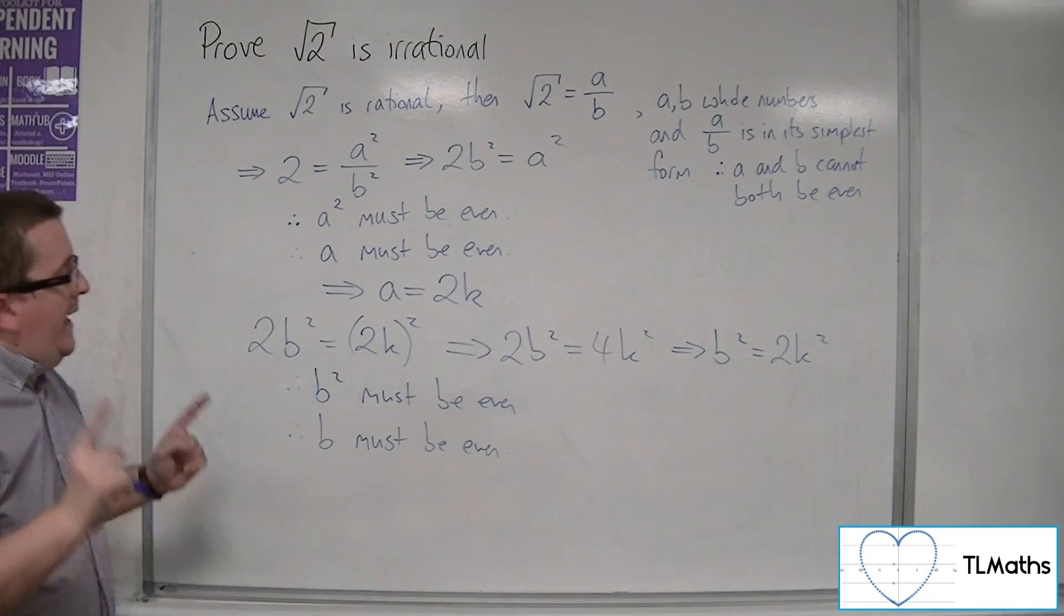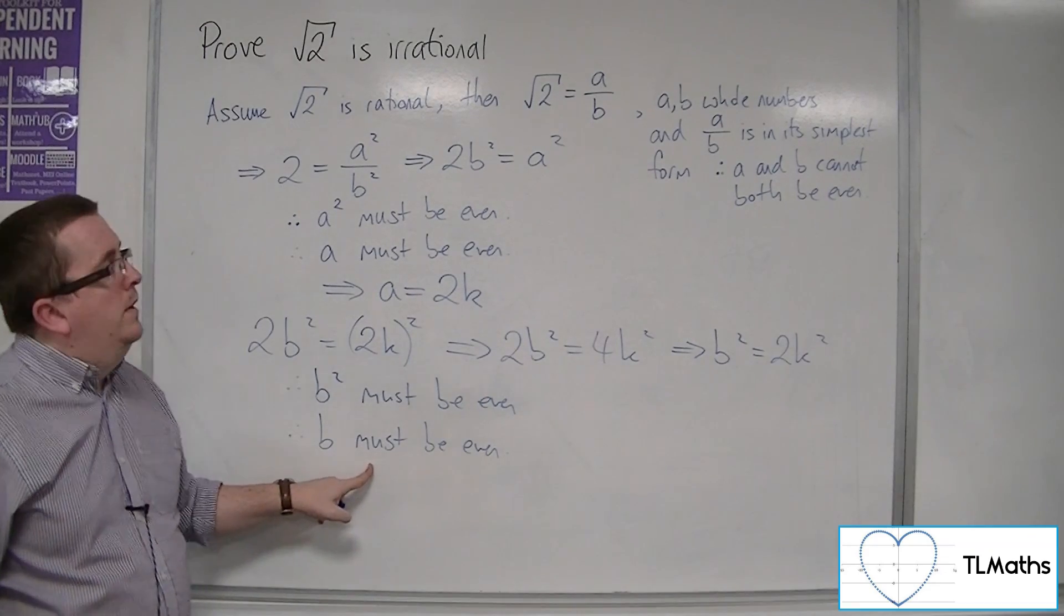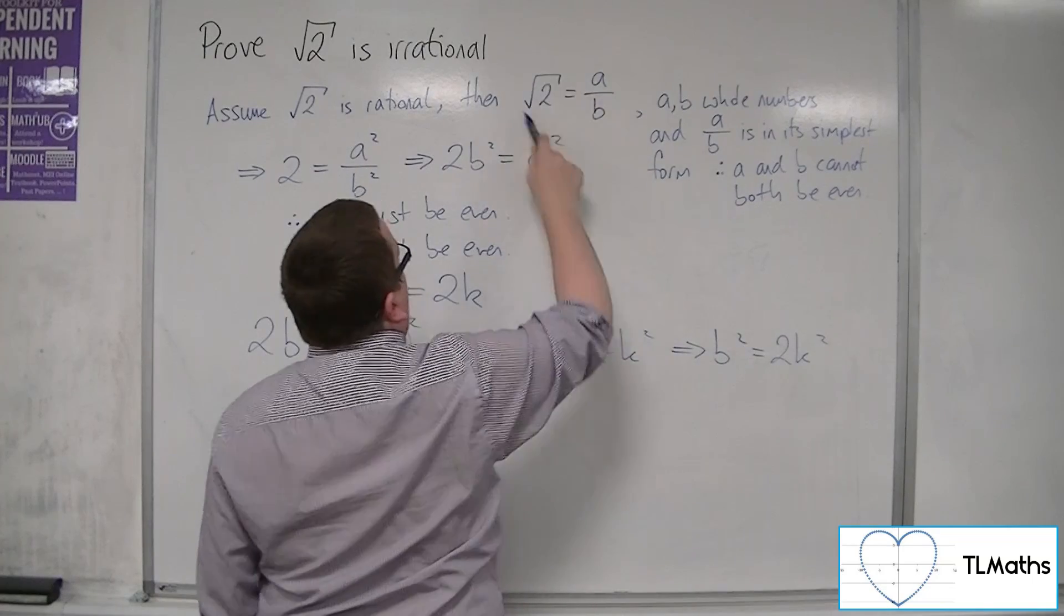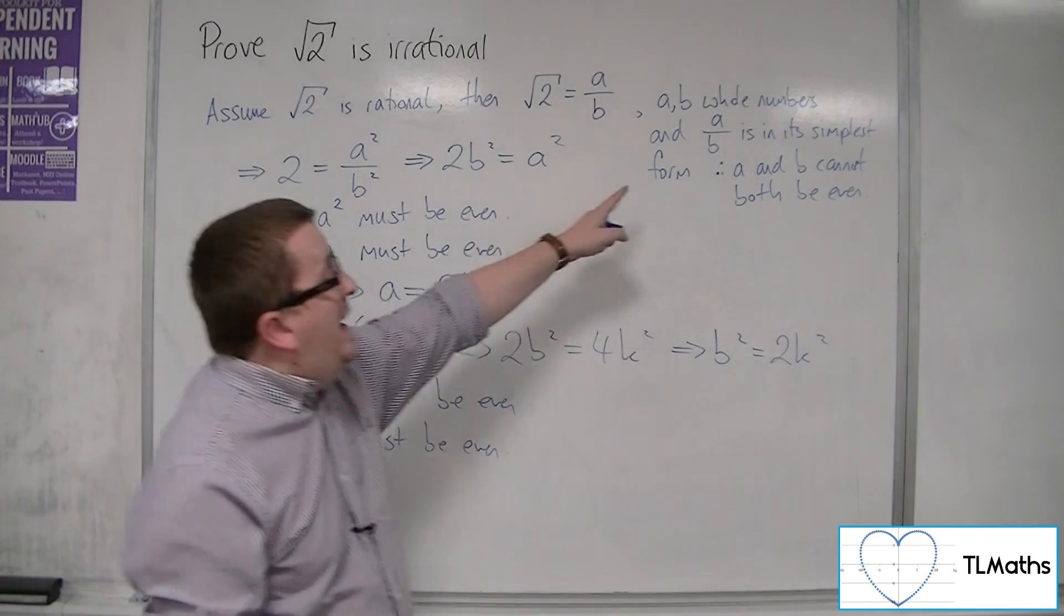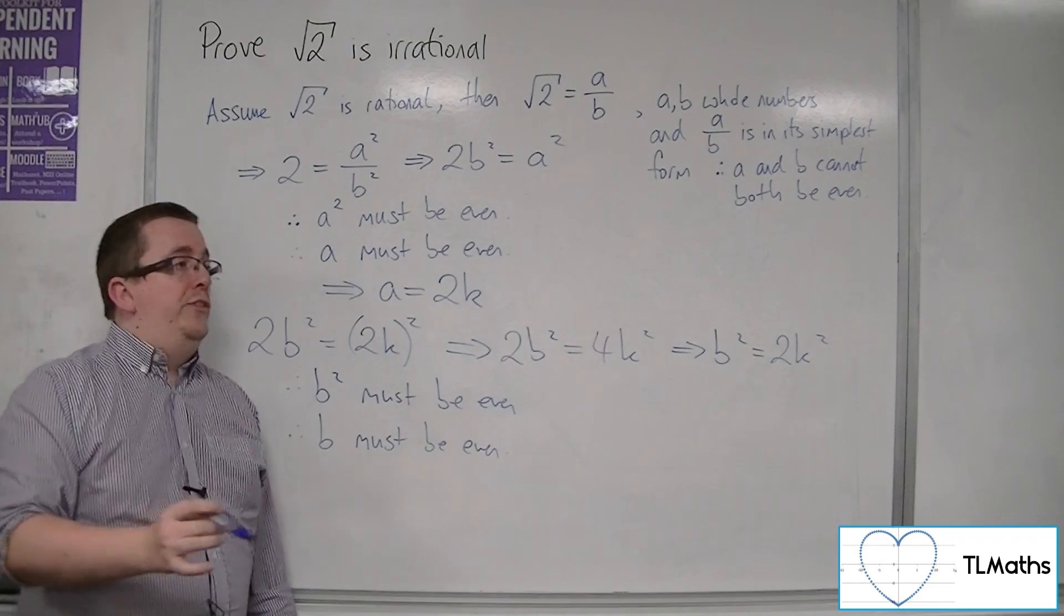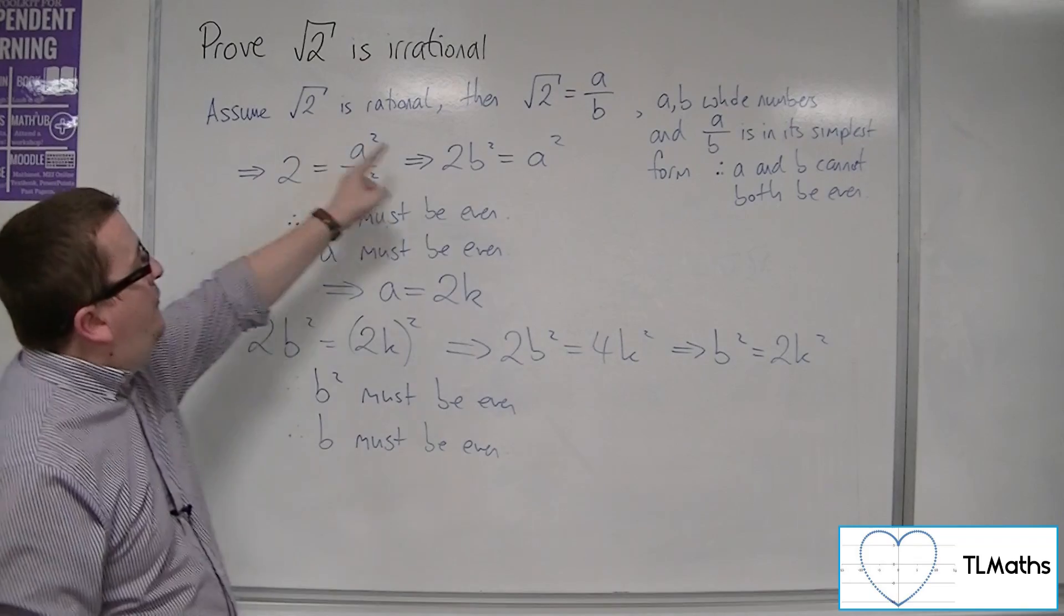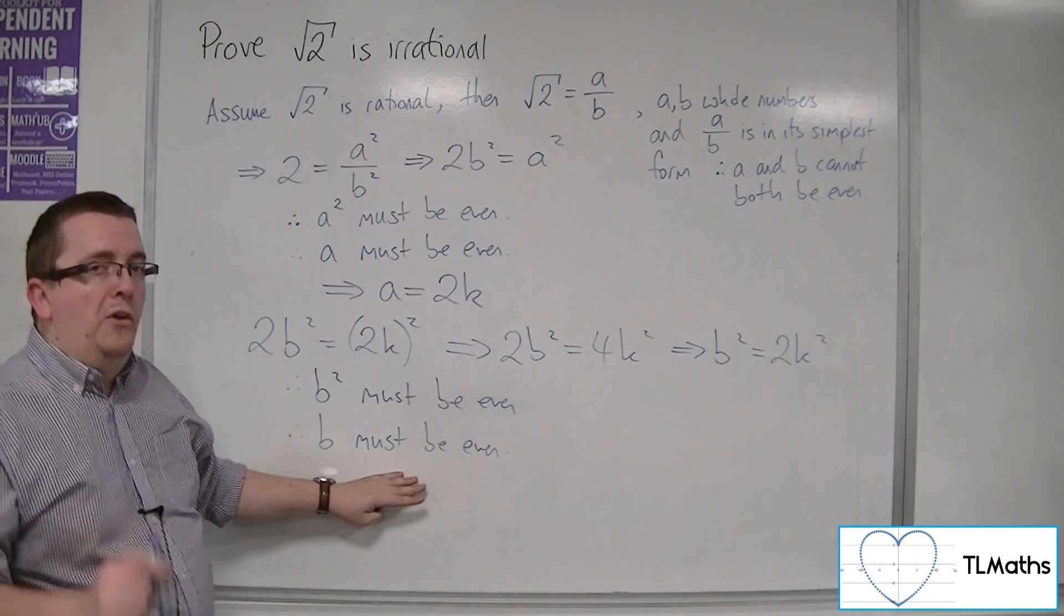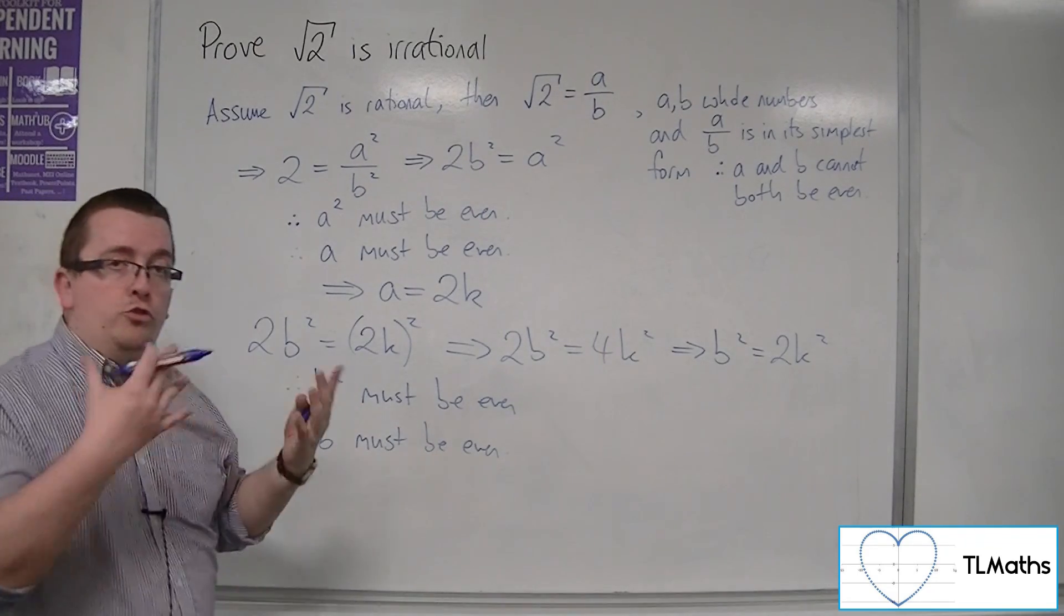However, if a is even and b is even, then the original equation that I wrote down cannot be right, because I said that a over b was in its simplest form. So a and b could not both be even. But I've shown that if this is the case, then a and b must both be even. And so therein lies the contradiction.